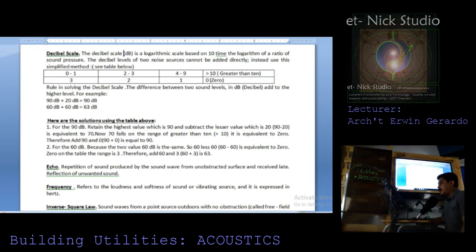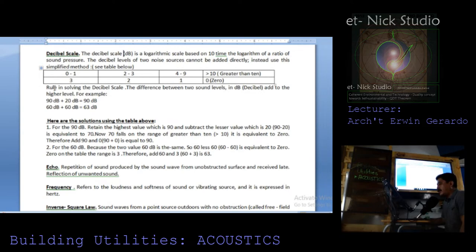The decibel levels of two noise sources cannot be added directly. Instead, use this simplified method. When the difference between two sound sources ranges from 0 to 1, add 3. If the difference ranges from 2 to 3, add 2. If the range is from 4 to 9, add 1. If the two noise sources differ by greater than 10, the amount added is 0.